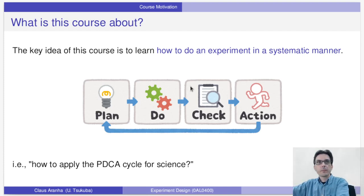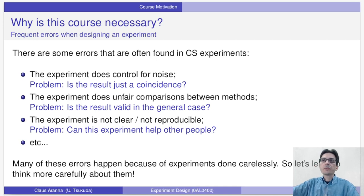Why is this important? One of the motivations I have for this course is that there are some mistakes that I see over and over again in computer science experiments. For example, experiments that do not control for coincidences or noise factors, or experiments that compare methods but do not do a fair comparison between these methods, or experiments that are not reproducible or not clear. All of these cases make the experiment less useful for other people and also less useful for the person who does the experiment.